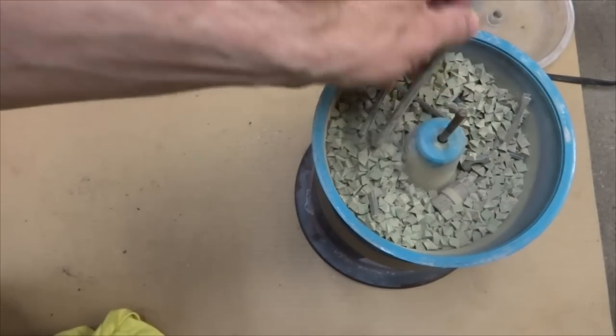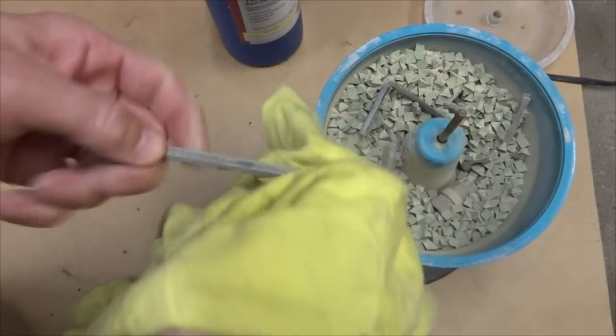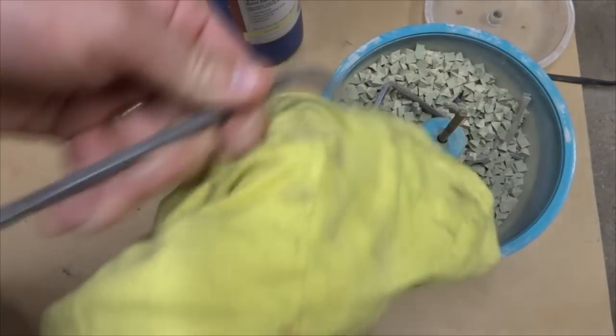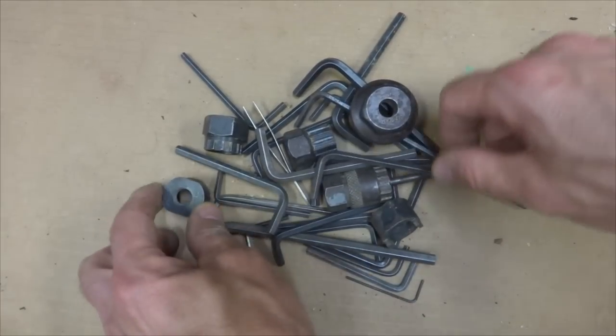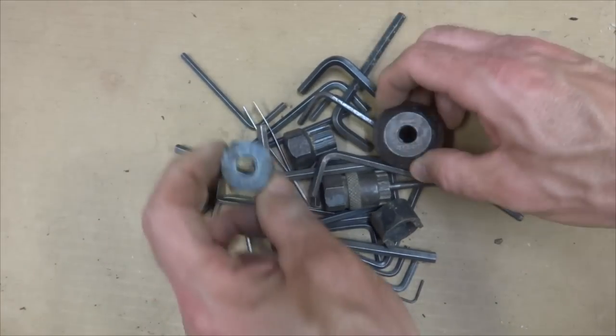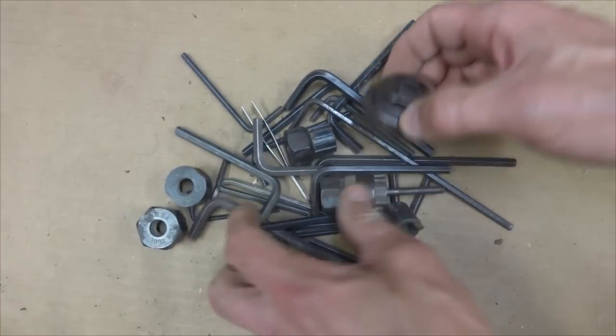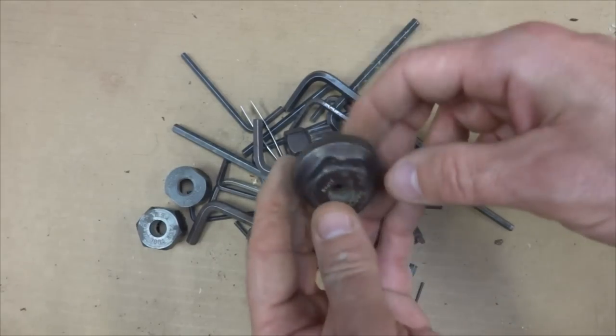Well, I've had the parts in here for about two and a half hours. Let's wipe them off and see what they look like. Here's the tools pulled out of the tumbler and huge improvement. Before they were covered with rust and now they look great.